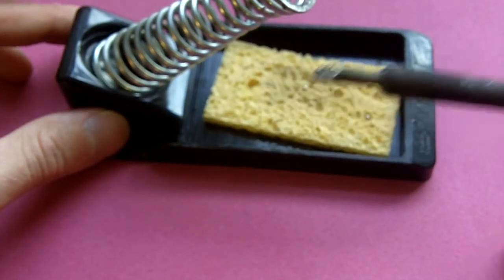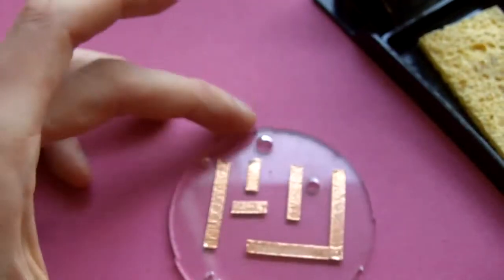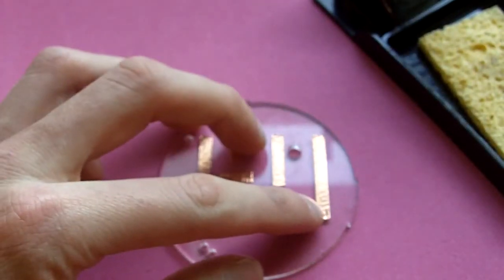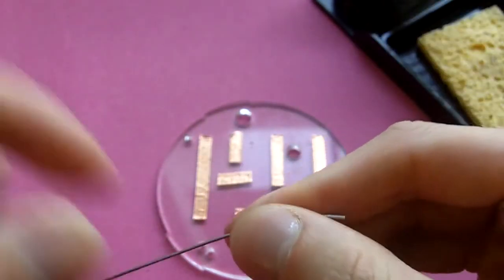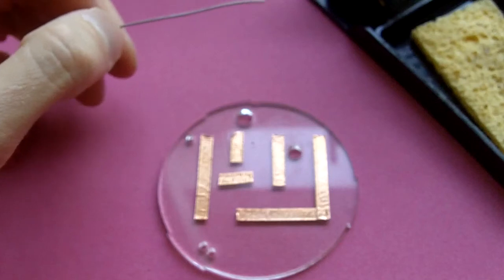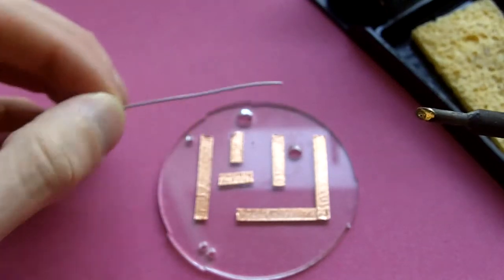First thing we need to do is solder this part here. To do that you need to use soldering wire. Put the soldering iron on the side so we can see this shiny part.